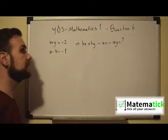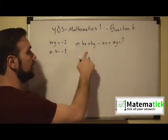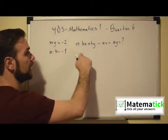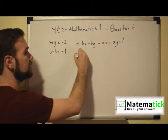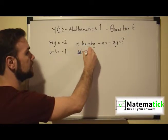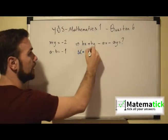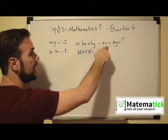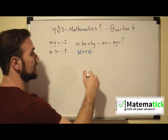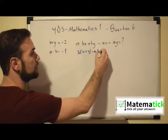The common factor for bx plus by is b times x plus y. For the common factor for ax minus ay is minus a, so we have minus a times x plus y.